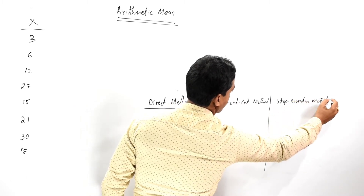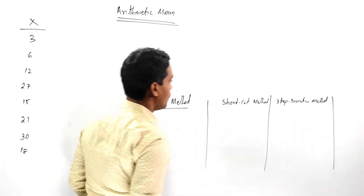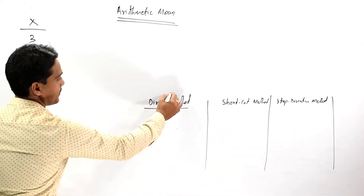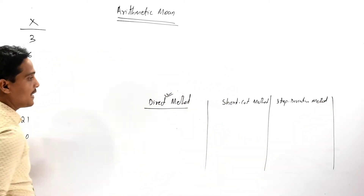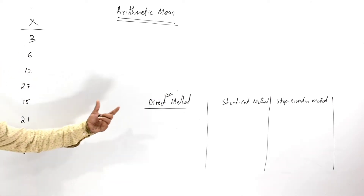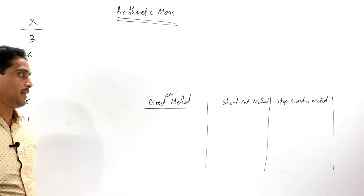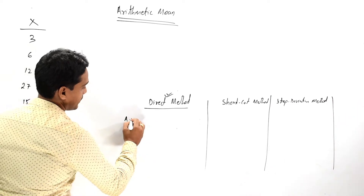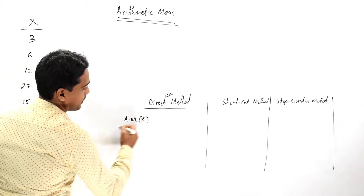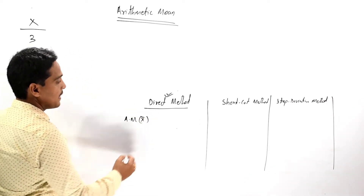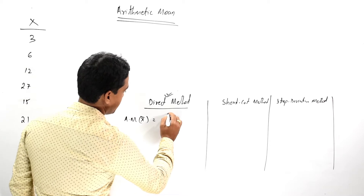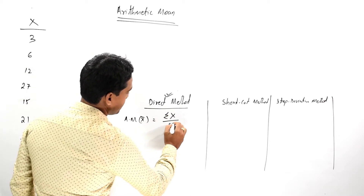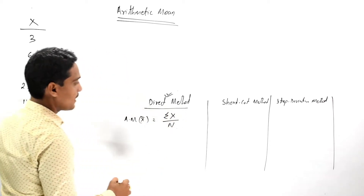So we will solve one by one. First, the direct method. The arithmetic mean under the direct method — denoted as x-bar — is the summation of x divided by n.